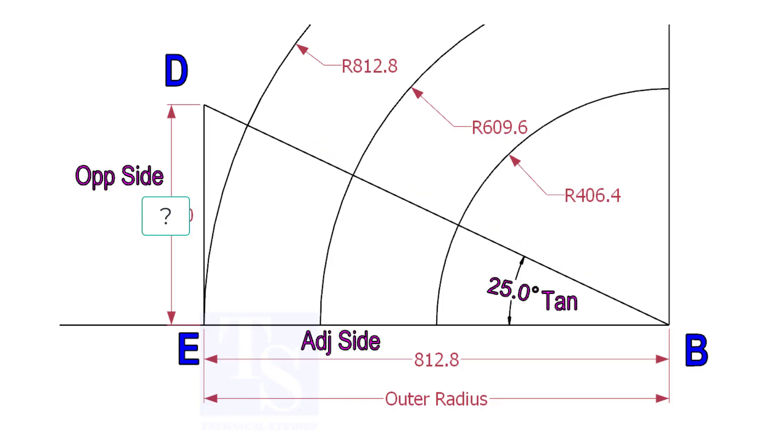To draw the line DB, we need to know the length of the line ED. To calculate ED, we need to apply the formula: tan-theta equals opposite side divided by adjacent side.